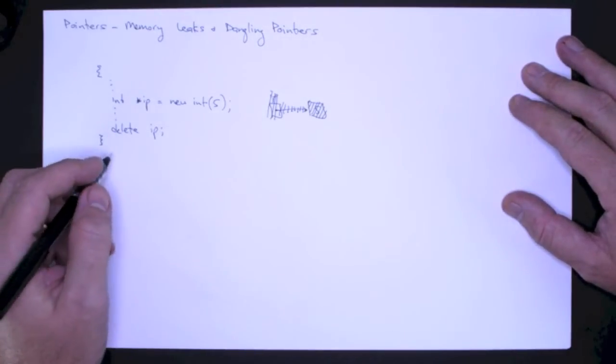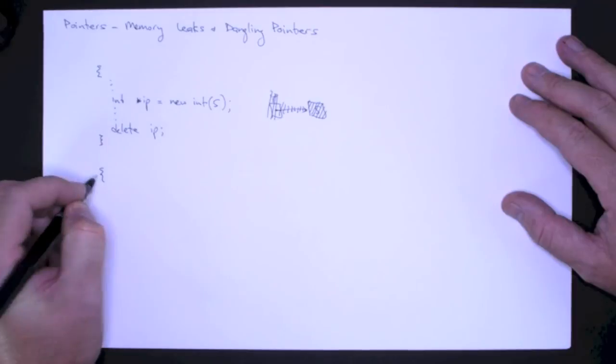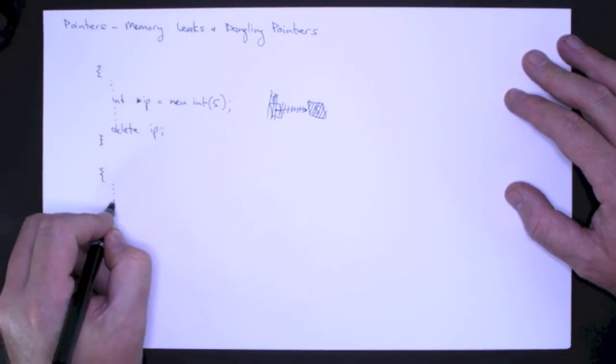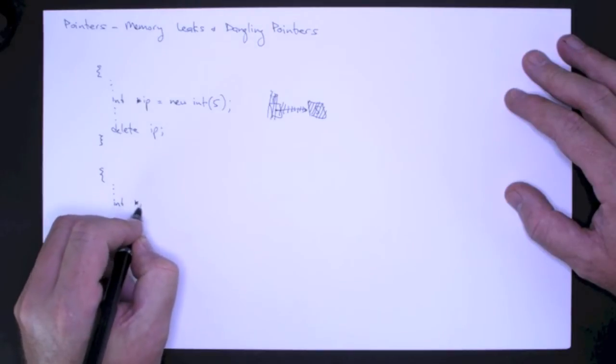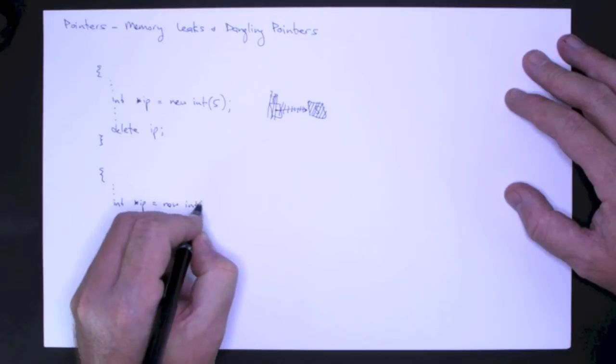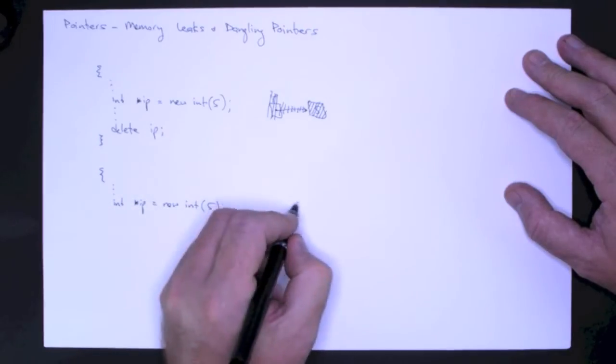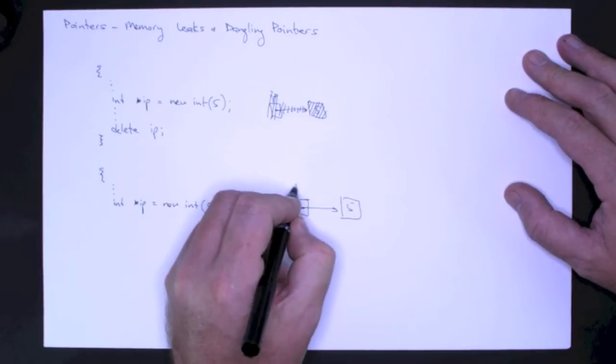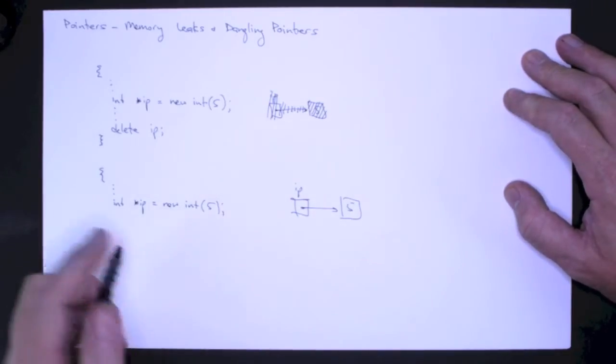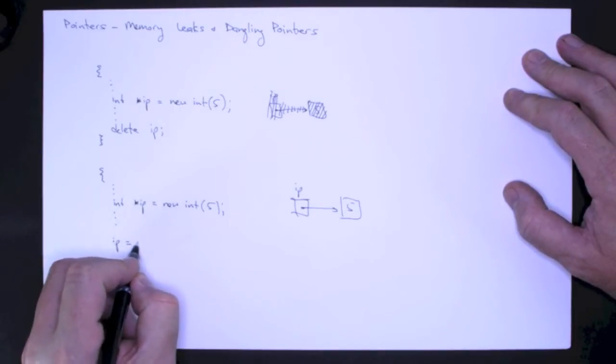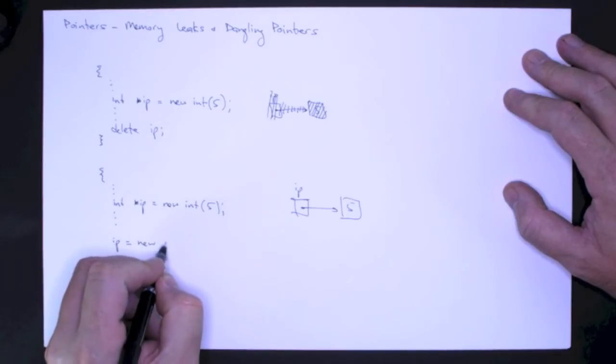One of the things that we can do, and this is an advantage of pointers, is that we can reuse them. So let's say, for example, I have a similar setup, where I dynamically allocate the integer 5. And then somewhere, later in the block, I reuse int pointer IP.